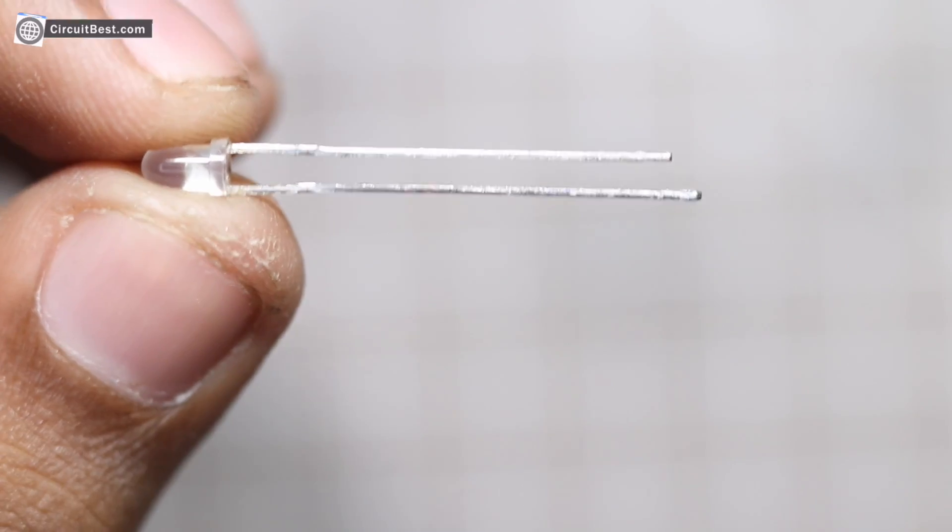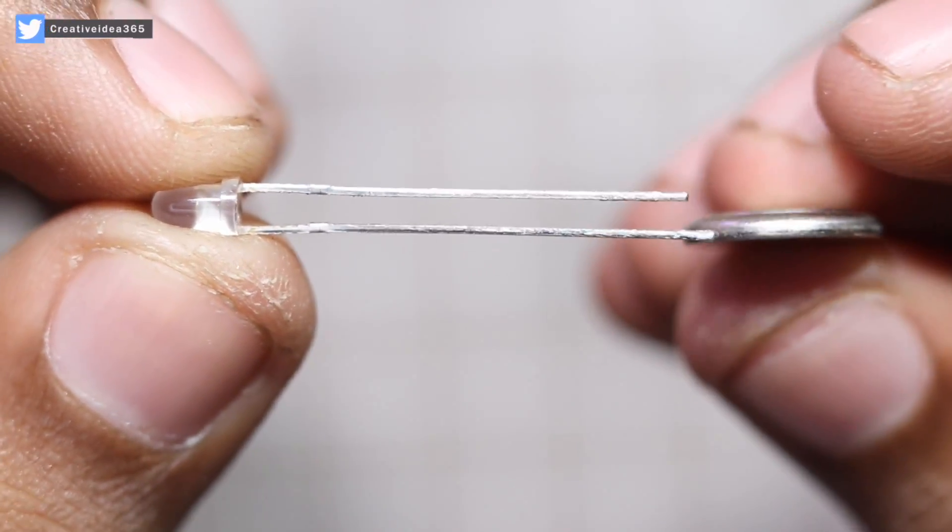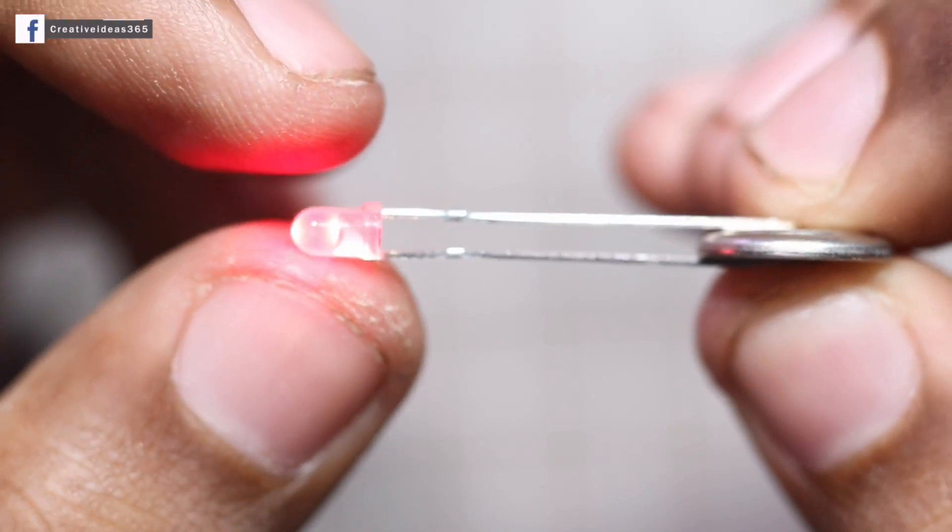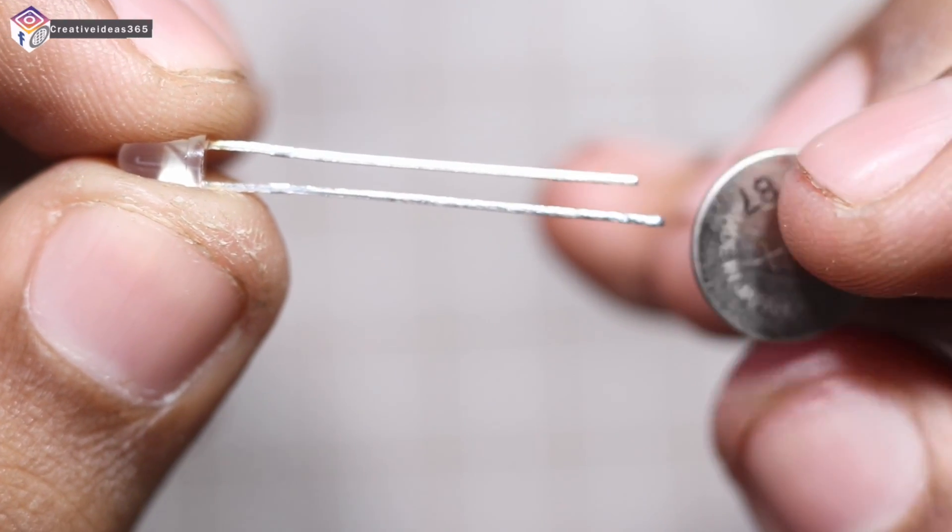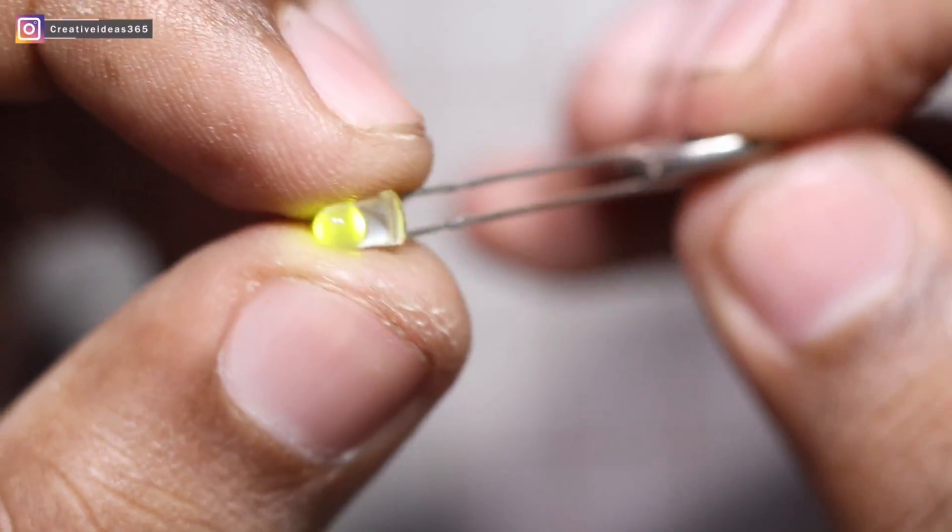This small 3mm LED has 2 LEDs inside. You can rotate and change the polarity and the LED's color will change. So how cool is that.